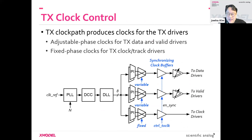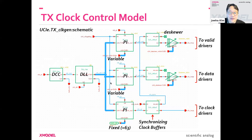Now I'll talk about the rest of the clock path — the settings that go into the different phase interpolator stages that generate the clock for data, clock for valid, and clock for clock. Here's a model for that clock control path. We take the clock through the DCC and DLL, and the phase interpolator mixes them to generate the adjustable clock. One clock has a fixed phase, and the other has a variable input for the adjustable phase.